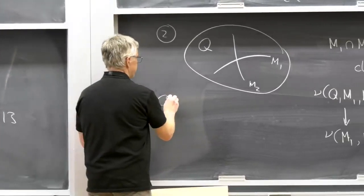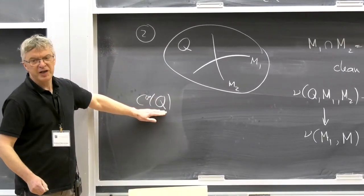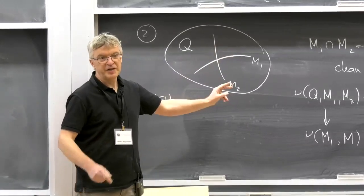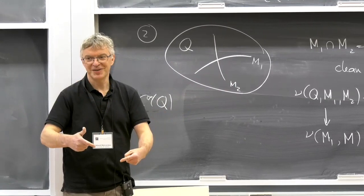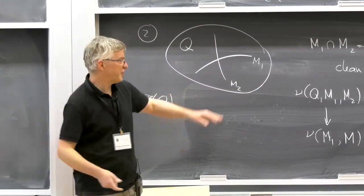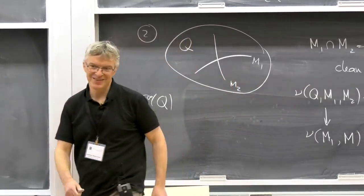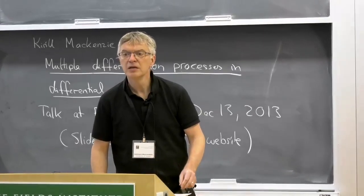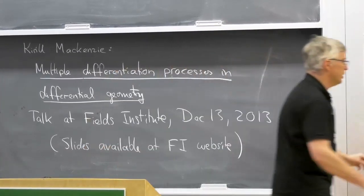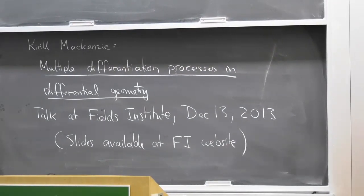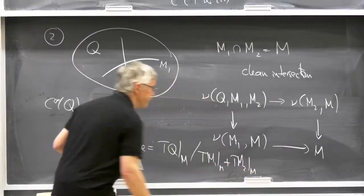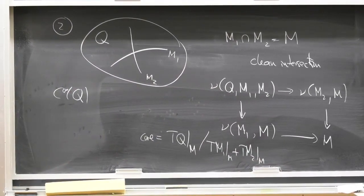You can say it algebraically: the algebra of smooth functions on Q has a bi-filtration given by the order of vanishing on the two submanifolds. You take the associated bi-graded algebra, and that's the algebra of bi-polynomial functions on the double vector bundle — you kind of take Spec. The core is TQ restricted to M, modulo TM1 plus TM2. That's zero exactly when the intersection is transverse.